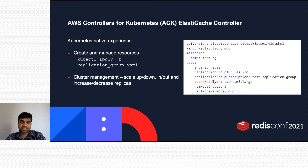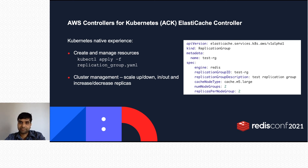All cluster management operations are supported — that is, scale up and down, scale in and out, and increase or decrease replicas. For example, if you want to scale up from cache.m5.large to cache.m6g.xlarge, just update the manifest and call kubectl apply.